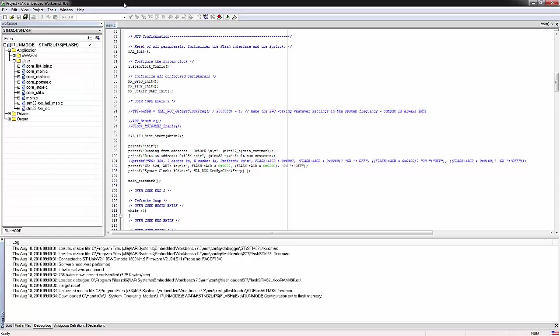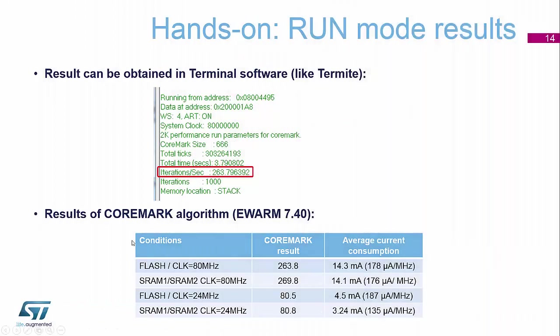So hopefully you should be seeing a similar response. If we compare that to our presentation slide — 14.3 milliamps with the device running at 80 megahertz — we're getting the correct current consumption, which works out to be about 178 microamps per megahertz in full run mode.